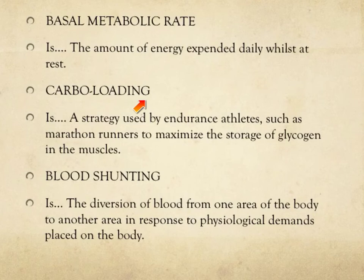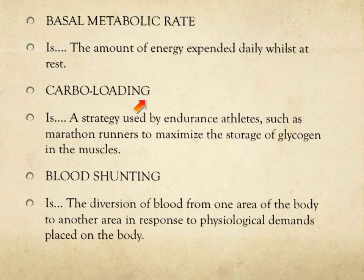Next we have carbo loading. This is a strategy used by endurance athletes such as marathon runners to maximise the storage of glycogen in the muscles. Take for example Mo Farah — in the build up to a big race, usually three to four days prior, he will increase the amount of carbohydrates he is intaking within his diet. This can then be stored in the liver as glycogen and when it comes to race day, it can be converted into glucose so that he can run harder and for longer periods.